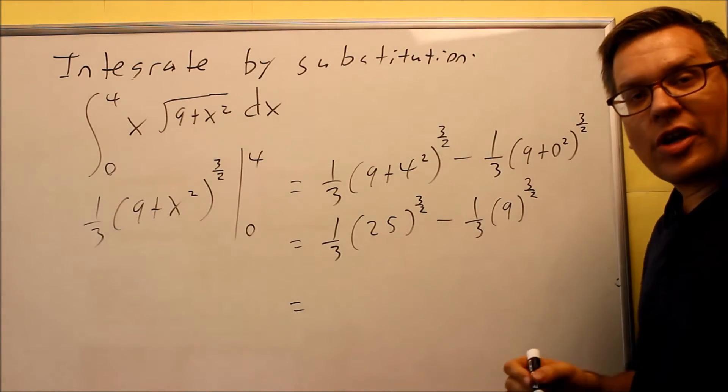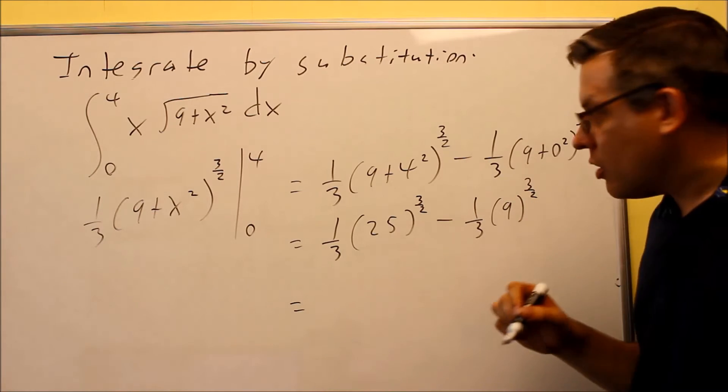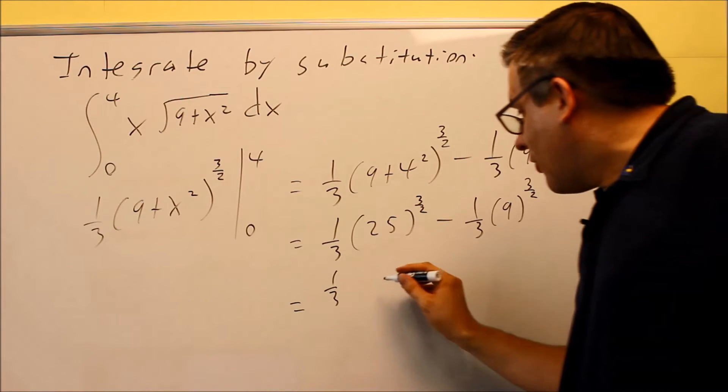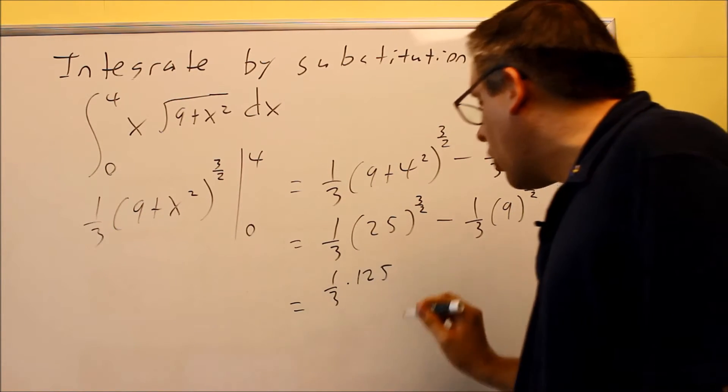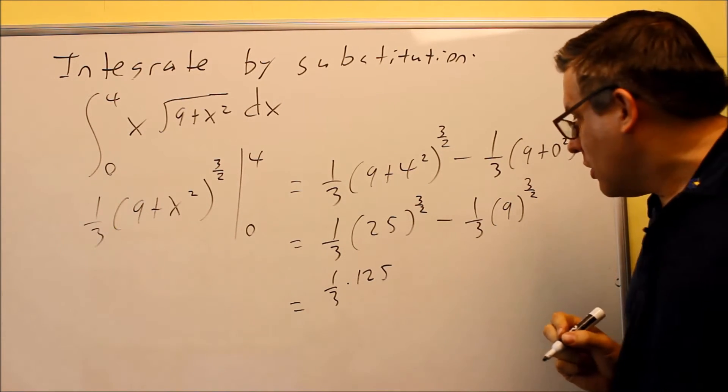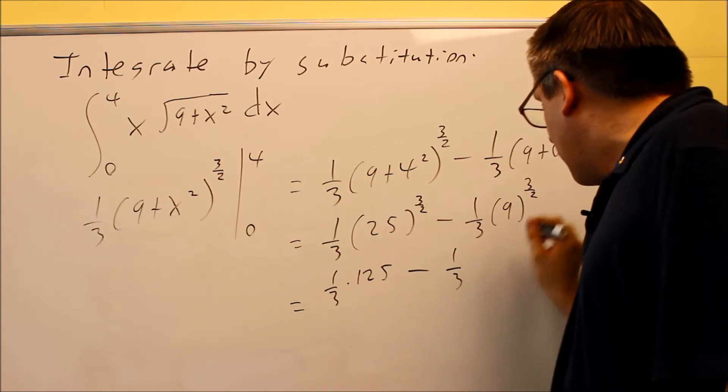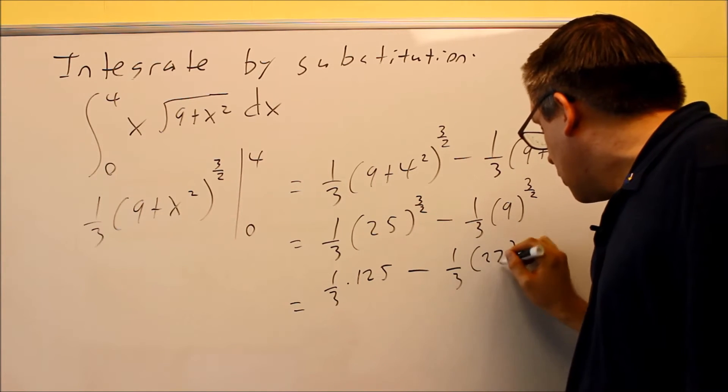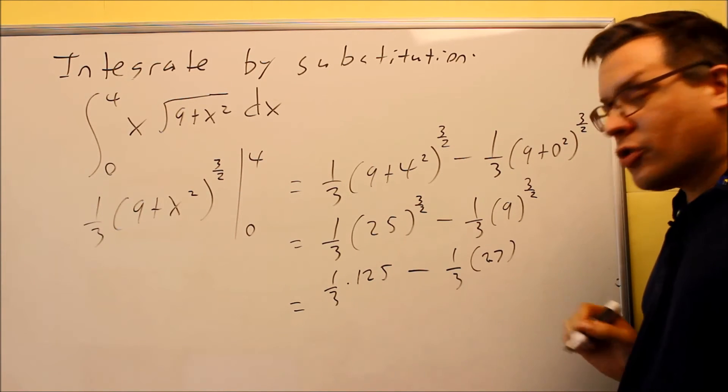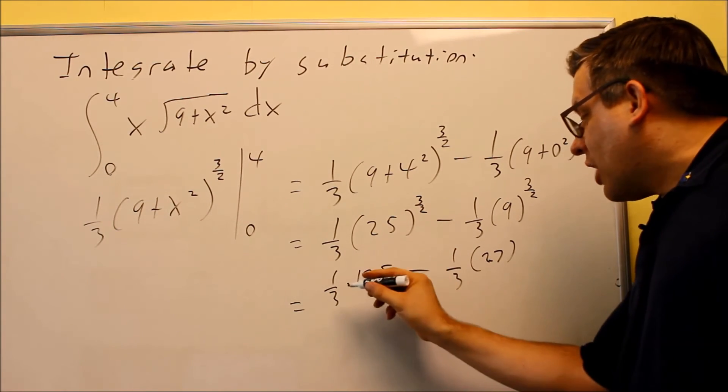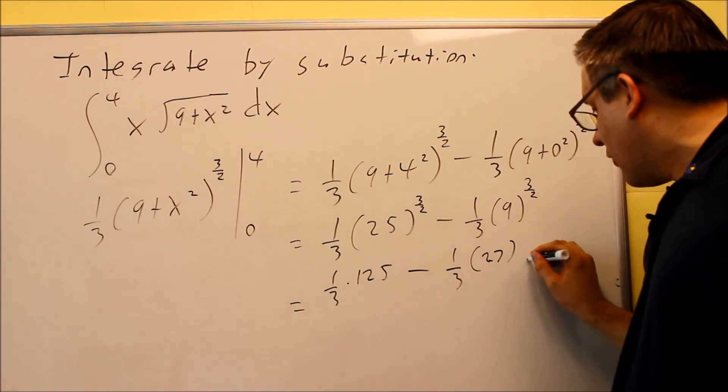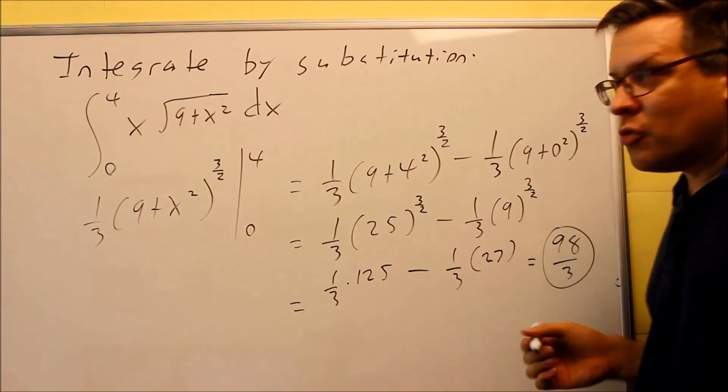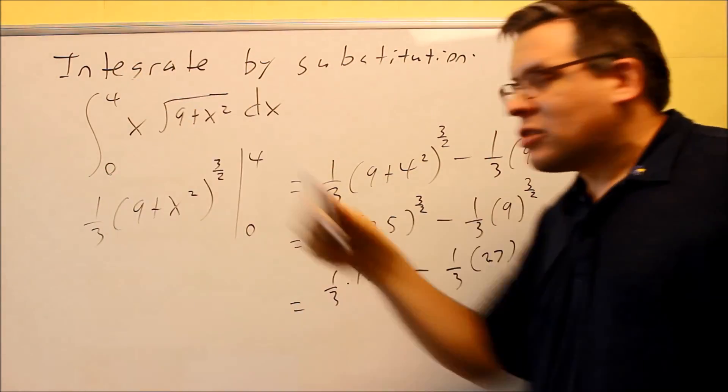I just want to work out what each of these are. If you raise something to the three-halves, it's like you're taking the square root and then you're cubing it. So for this one, 25, the square root of 25 is 5, and then 5 cubed, you're going to get 125 for that part. For this one here, I have square root of 9 is 3, and then 3 cubed is going to be 27. So this part here will turn into a 9. So if you do 125 thirds minus 9, the final answer you're going to get is going to be 98 thirds. So 98 thirds would be the numerical equivalent to this entire integral.